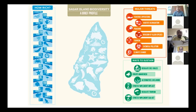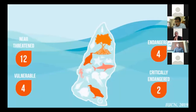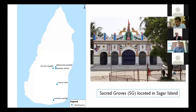Using secondary data and consultation with organizations like WWF, we identified species by IUCN categories: 13 vulnerable species, 4 endangered, and 2 critically endangered. Critically endangered species include the national aquatic animal, the Ganges river dolphin, which is freshwater in nature but migrates down to Sagar Island when salinity drops during the monsoon season. There are also case studies showing they migrate to Bangladesh and return.